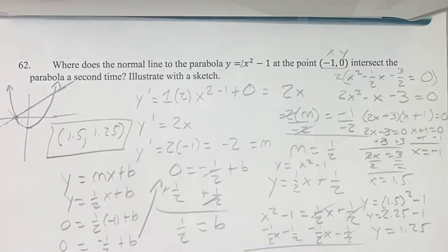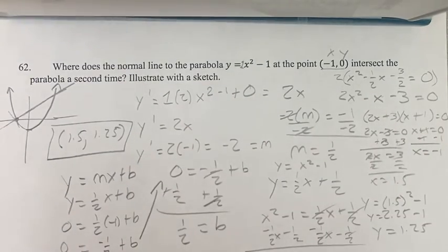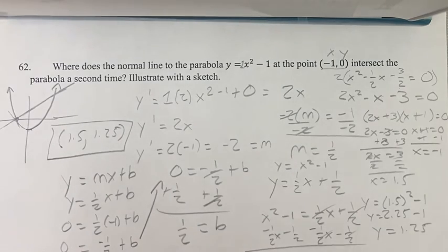And that is going to be the point where the normal line to the parabola at the point negative 1, 0 intersects the parabola a second time. As always, thank you for liking and subscribing, and I'll see you in the next video.